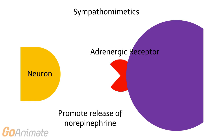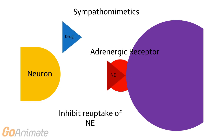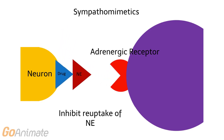Other sympathomimetics can work indirectly by promoting the release of norepinephrine from presynaptic vesicles. Some sympathomimetics block reuptake of norepinephrine. Examples of sympathomimetics that work indirectly include amphetamine and cocaine.